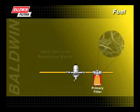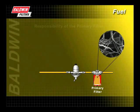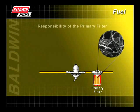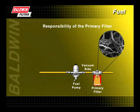Primary filters typically have more open and less restrictive media. They are built to capture large particles and to permit greater flow of fuel. The main responsibility of the primary filter is to protect the fuel pump from contaminants. For this reason, the filter is usually mounted before or on the vacuum side of the fuel pump.